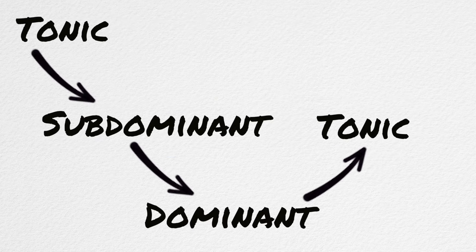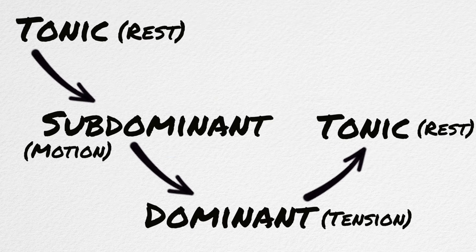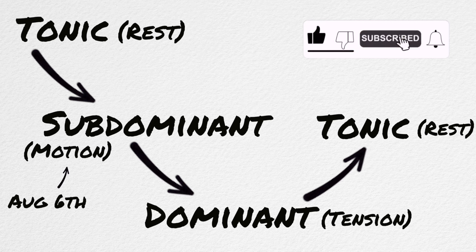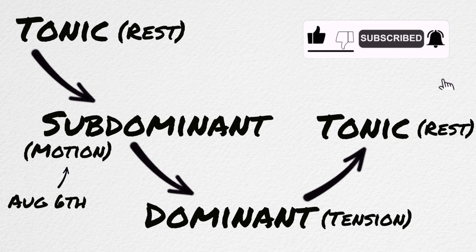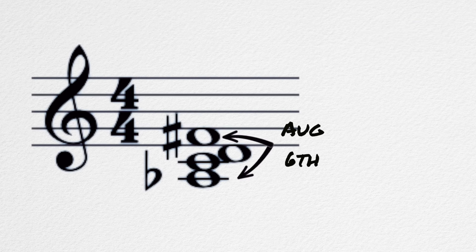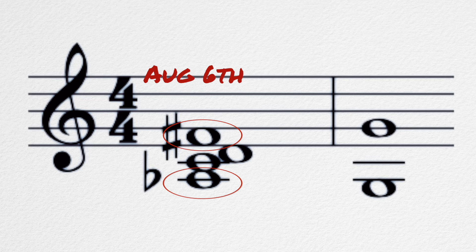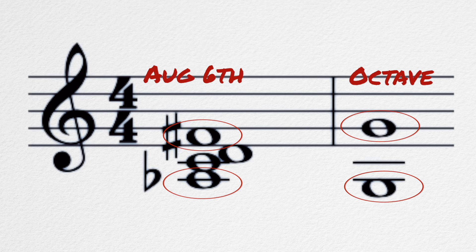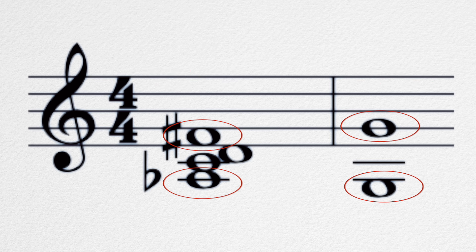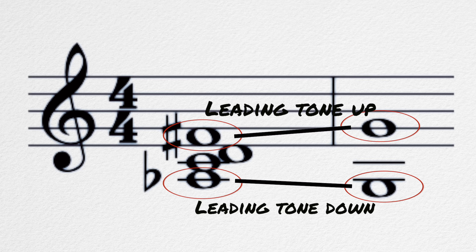Augmented sixth chords normally fill the subdominant role — they move away from the tonic and towards the dominant, creating motion in chord progression. The augmented sixth interval is formed between the raised scale degree four and the lowered scale degree six, and it almost always expands outward to an octave. This gives it its unique sound because both notes in the augmented sixth act as leading tones that move towards the dominant.